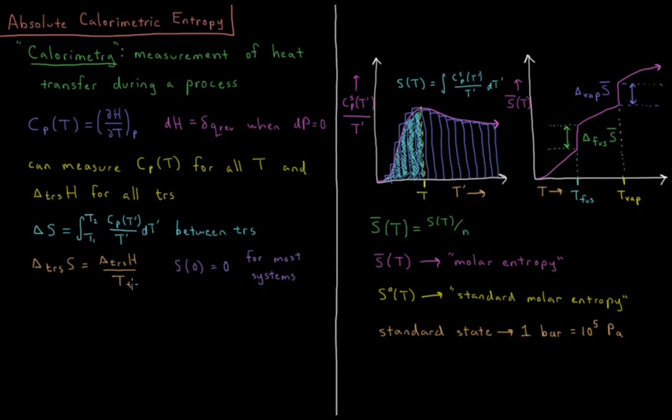Then we go from the liquid to the gas, integrating again for the constant pressure heat capacity of the liquid divided by the temperature, all the way up to the boiling point.